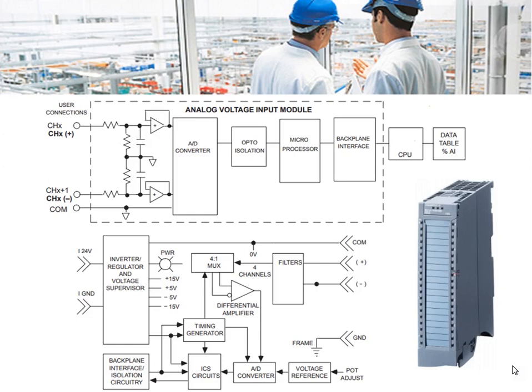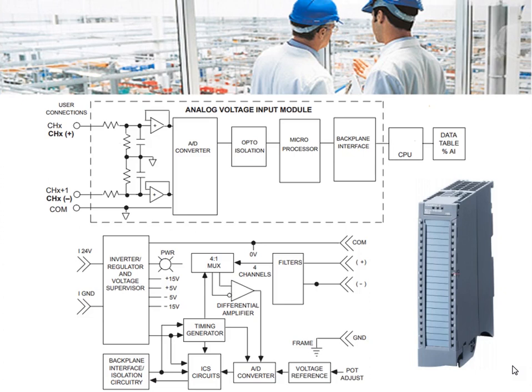A four-channel analog input module is shown in the figure. The differential signal, through filters, is fed to a 4-to-1 multiplexer, and then it is fed to an ADC and then to the CPU of the PLC.